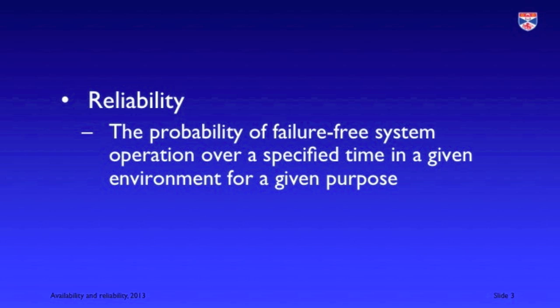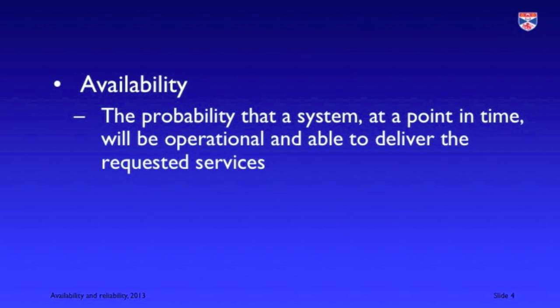The formal definition is: reliability is the probability of failure-free system operation over a specified time in a given environment for a given purpose. This takes into account the fact that if you're using the system for something it's not meant to be used for, you won't get the same level of reliability. The formal definition of availability is the probability that the system at a point in time will be operational and able to deliver the requested services.